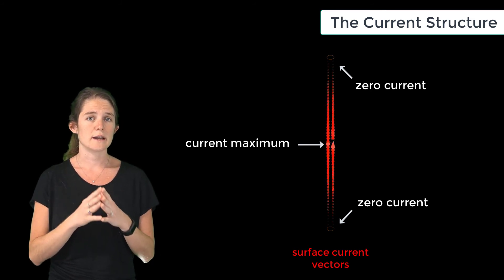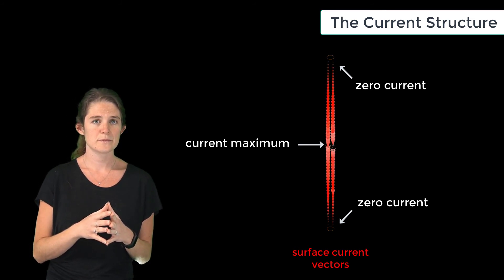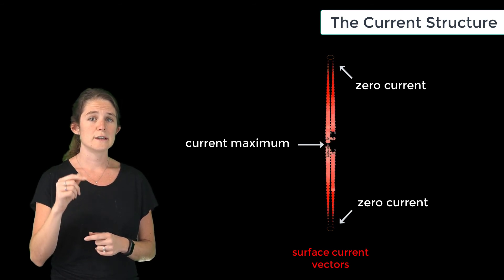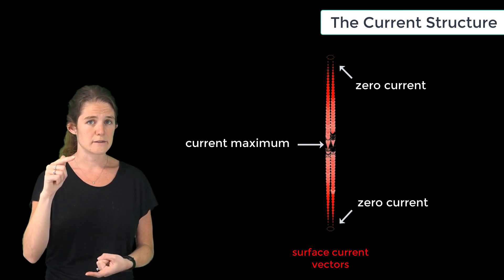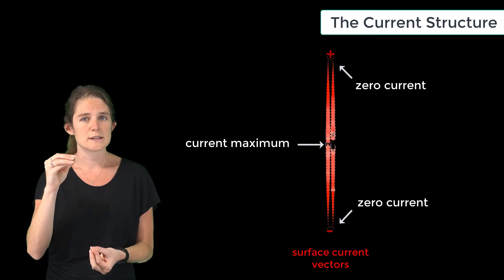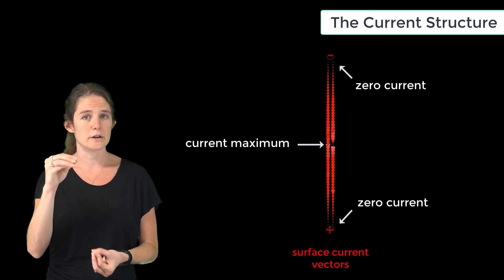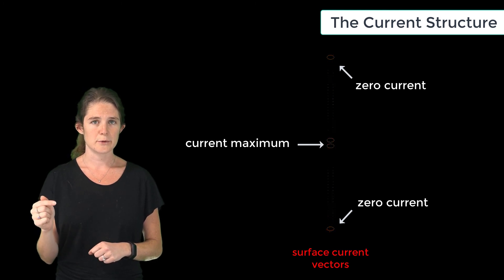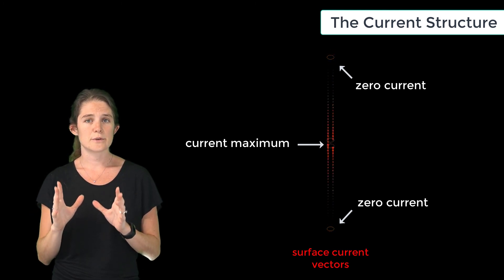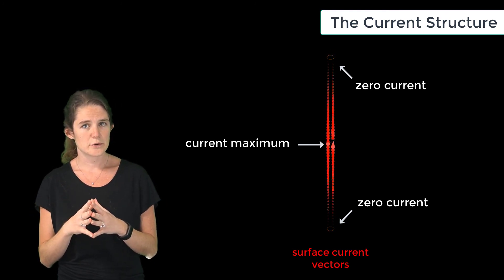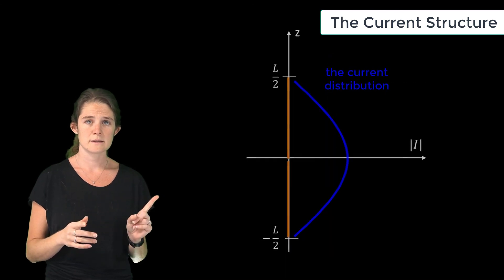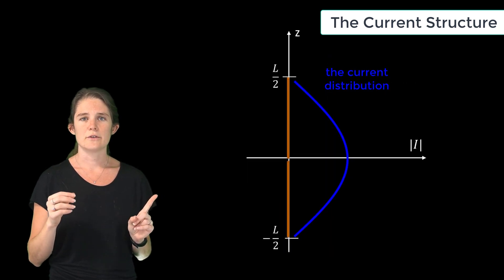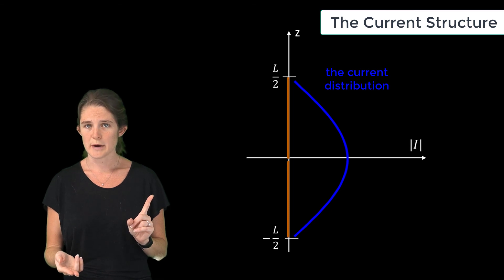So you can see that the current direction is alternating upward and downward. You can see that the current is zero of necessity at the ends of the dipole. Remember that this corresponds to high charge buildup at those current nulls, and you see a current maximum in the center of the dipole. This is a sinusoidal distribution, so we can also view it in graphical form like this. This is the current magnitude graphed from negative L over 2, the bottom end of the dipole, to L over 2, the upper end of the dipole.